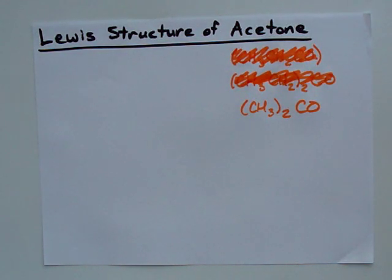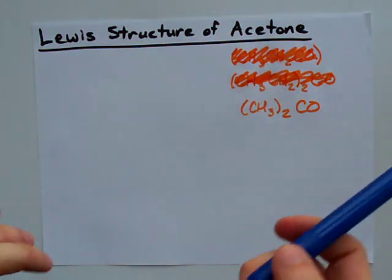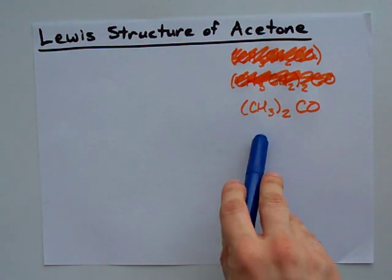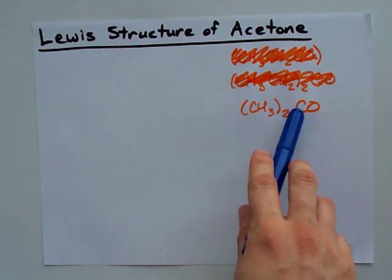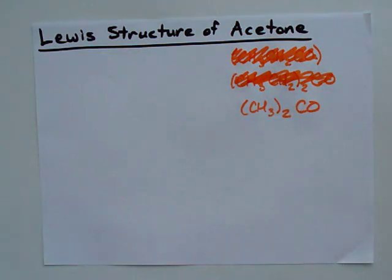Acetone is just one of those molecules you've got to know the formula for. Clearly I didn't know it the first two times and had to look it up, but it's (CH3)2CO, and we're looking for the Lewis structure of this.